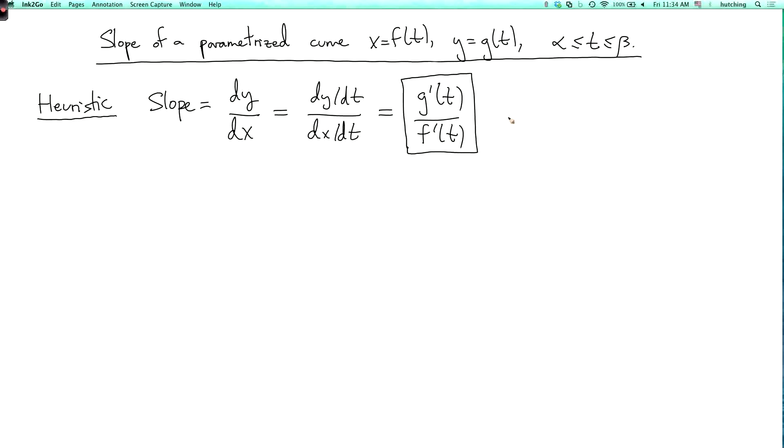Note that this expression only makes sense if f prime of t is not equal to zero. So if f prime of t equals zero, what does this mean? Well it means that the rate of change of x at time t is zero. So we are only moving in the y direction if we're moving at all. So that tells us that the slope should be infinite, the tangent line should be vertical.